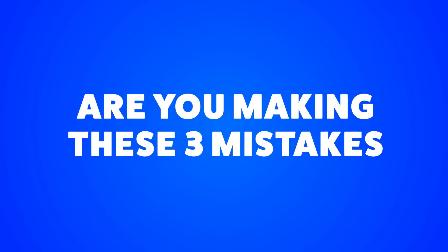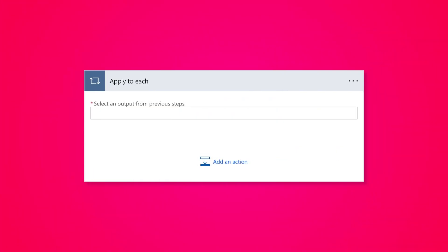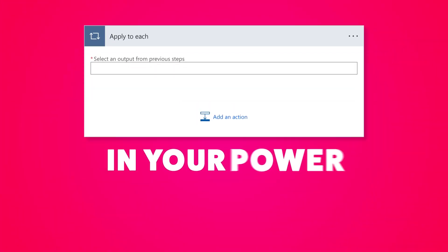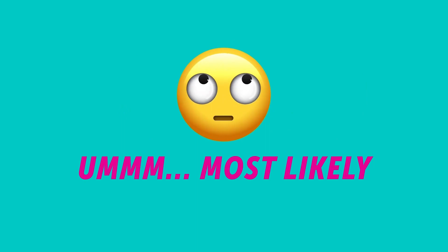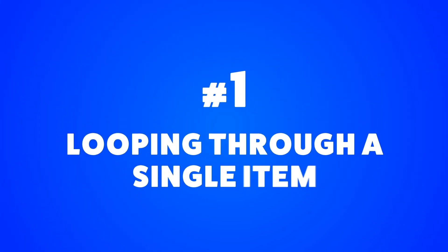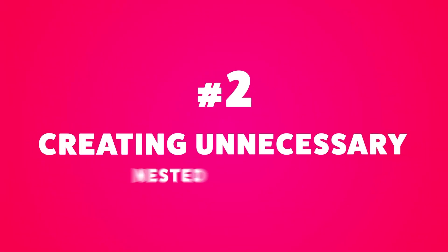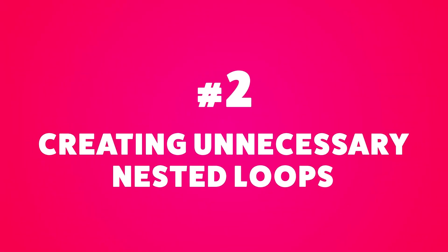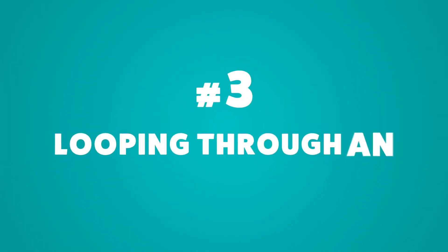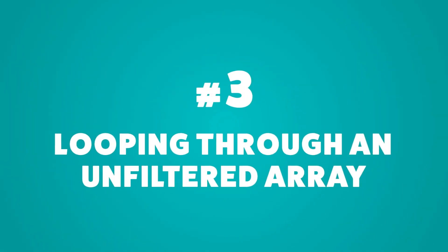Are you making these three mistakes with the apply to each action in your Power Automate flow? Number one, looping through a single item. Number two, creating unnecessary nested loops. Number three, looping through an unfiltered array.